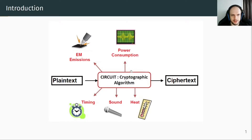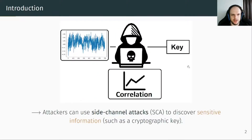In our experiment, we used the EM emission and power consumption. An attacker can capture several traces of electromagnetic emission and power consumption, and use some mathematical tools such as correlation, to discover sensitive information. Depending on the context and the capability of the attacker, he can proceed in different ways.